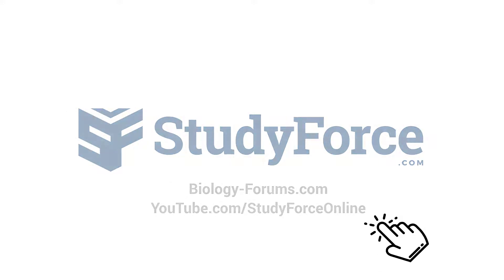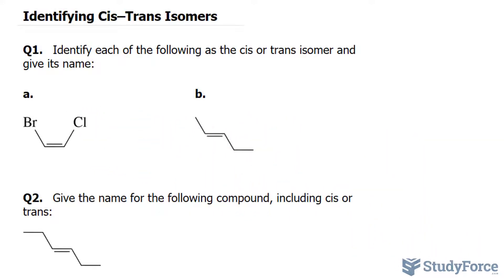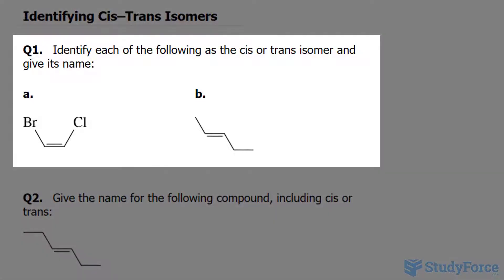In this lesson, I'll be teaching you how to identify cis-trans isomers. Question 1 reads: identify each of the following as cis or trans isomer and give its name.